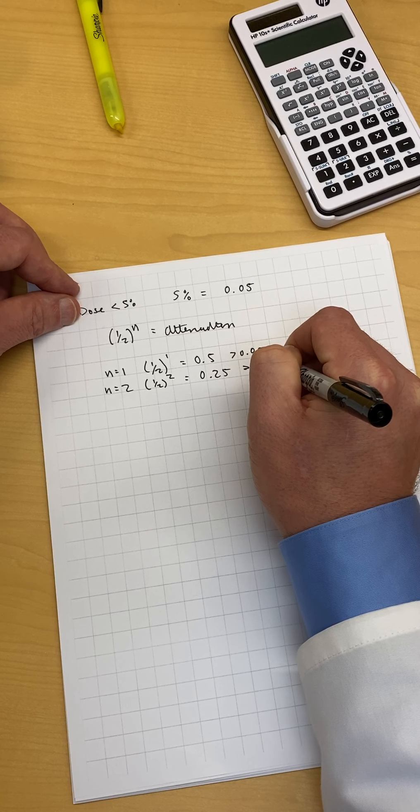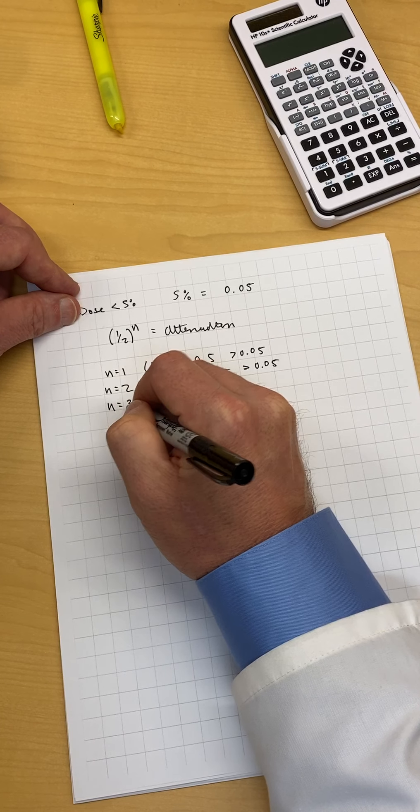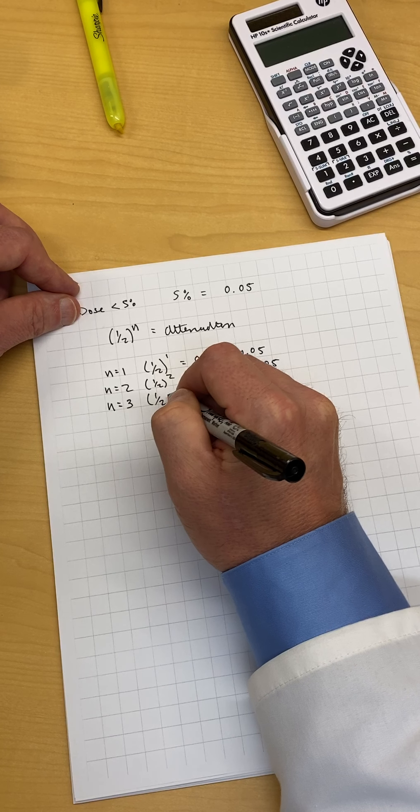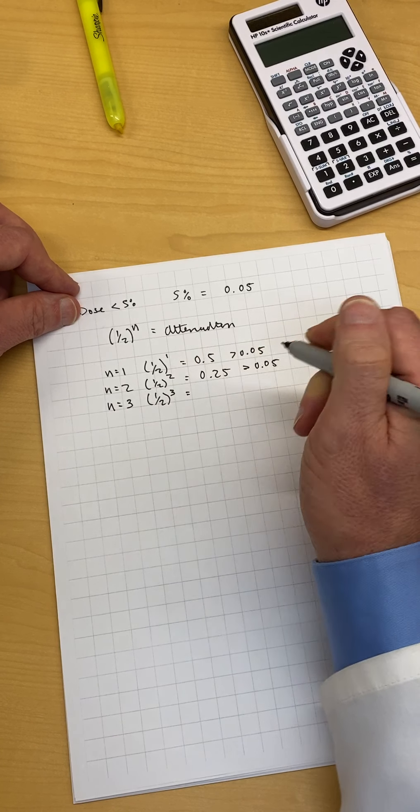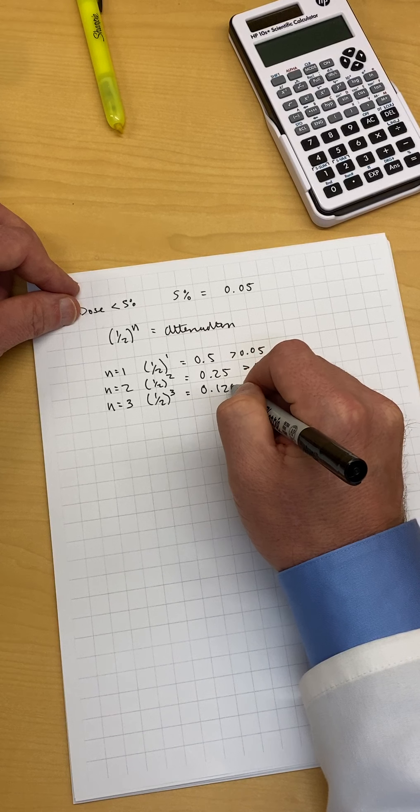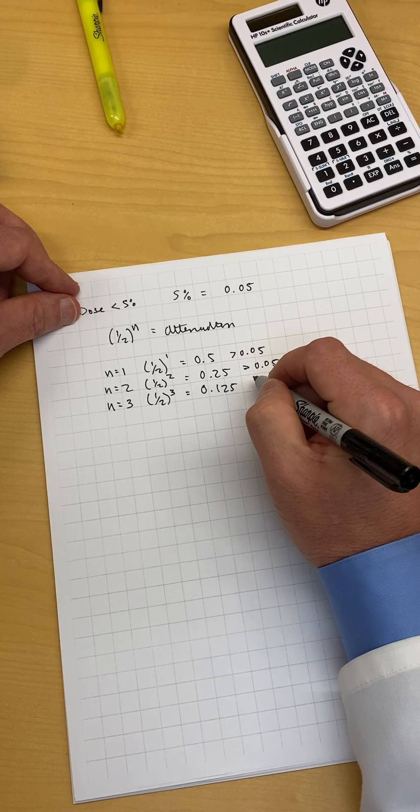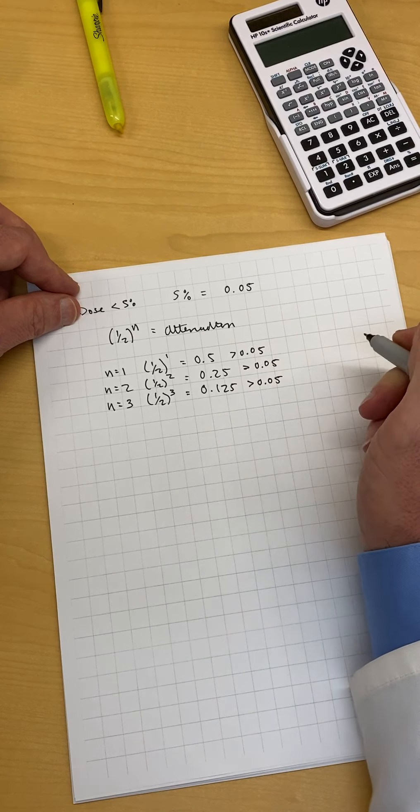N equals three: one half to the third equals 0.125, twelve and a half percent. That's still greater than 0.05, so we need another half value layer.